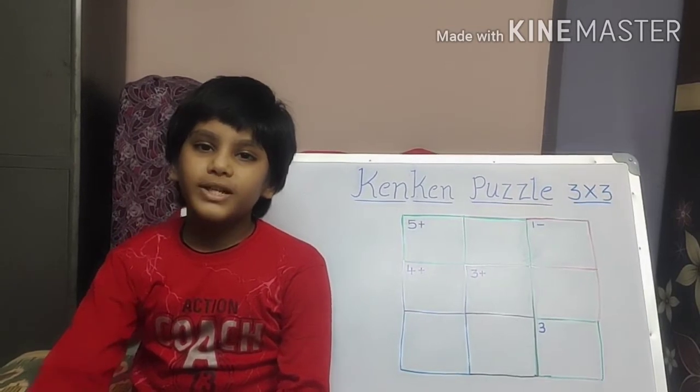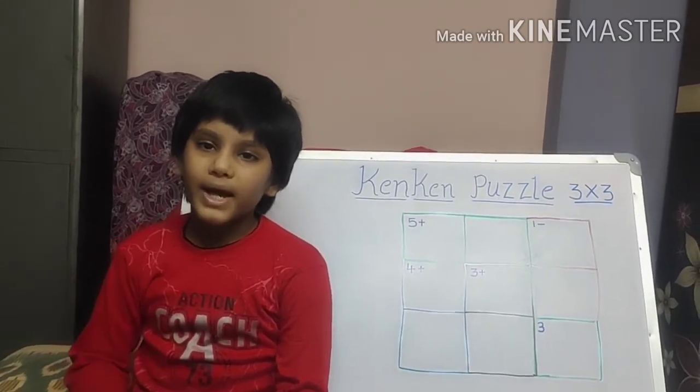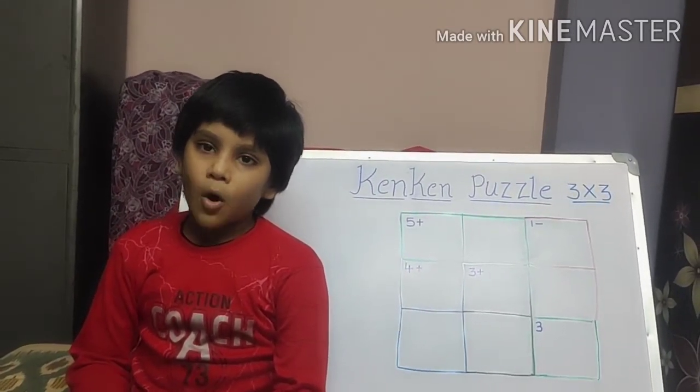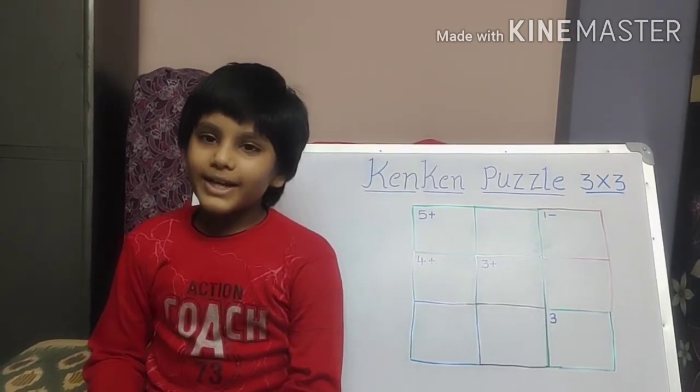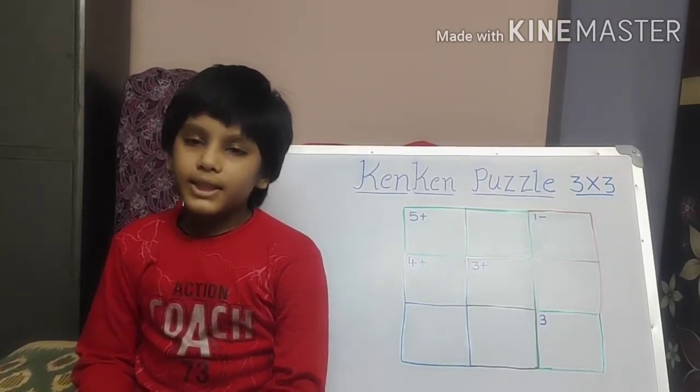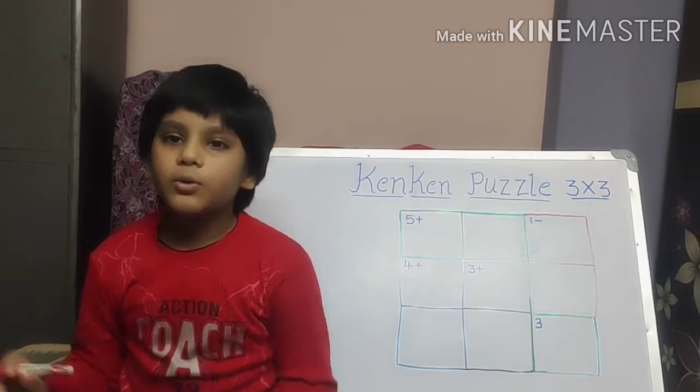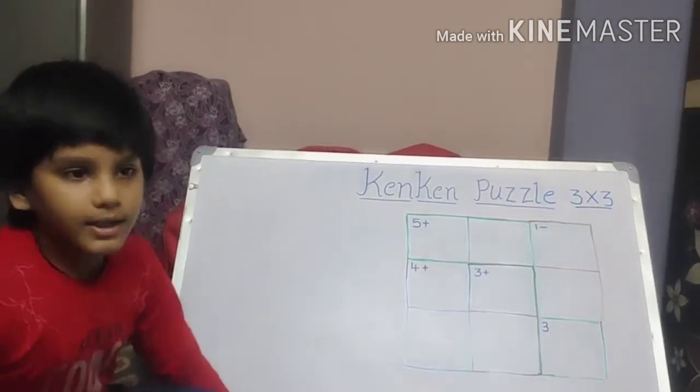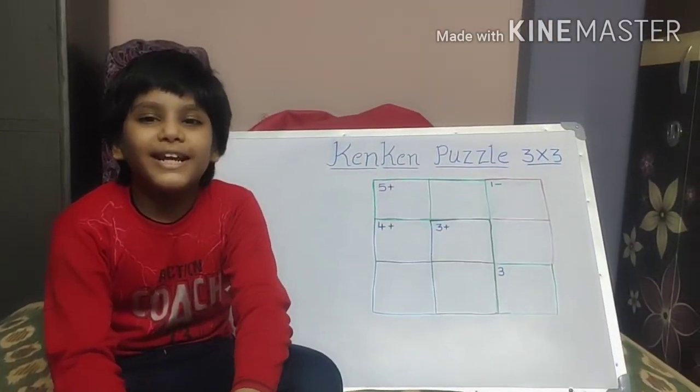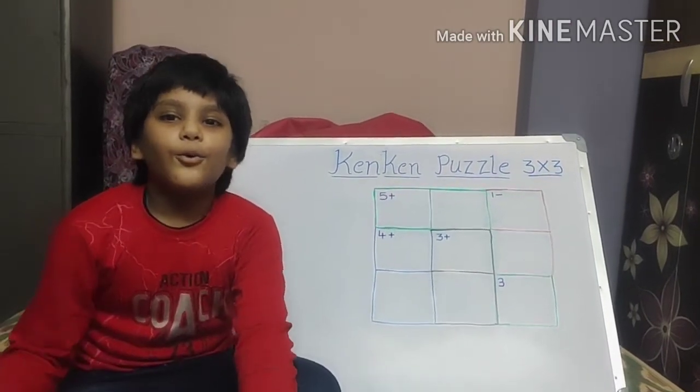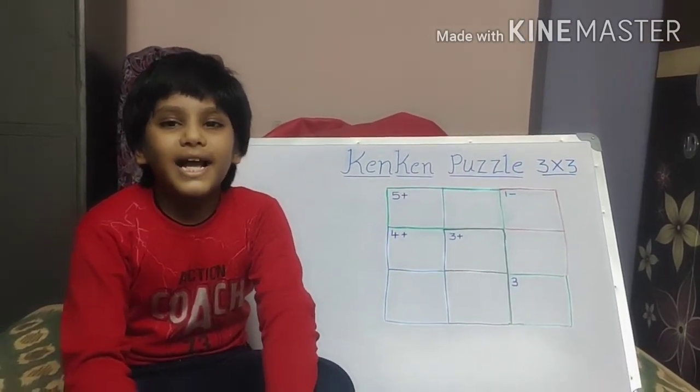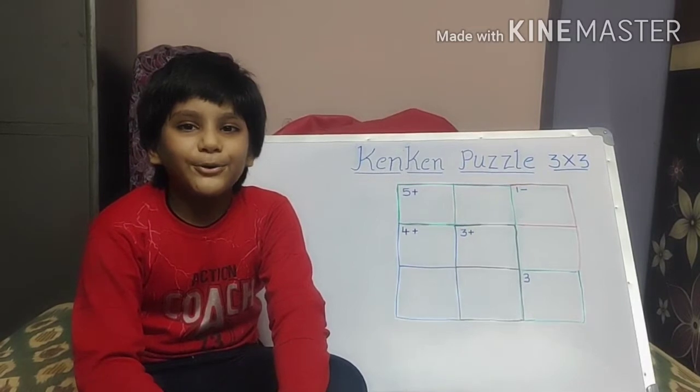Now the first rule is there is no zero in the KenKen Puzzle. There are only natural numbers. And the second rule is if we have three rows three columns we have to use only natural numbers one, two, three.